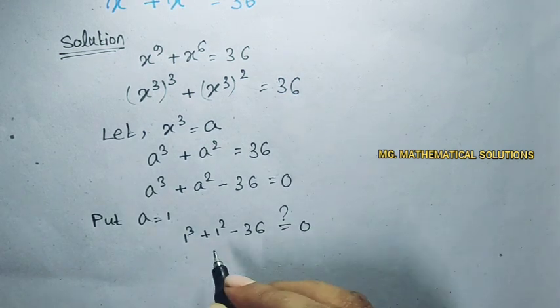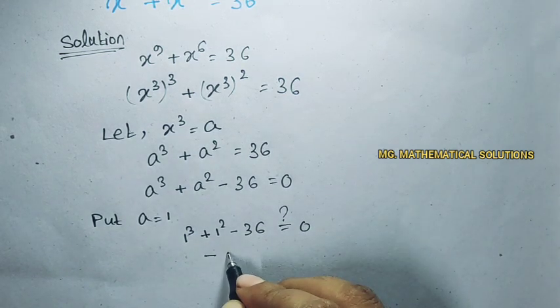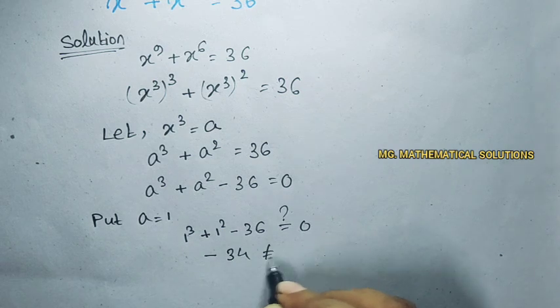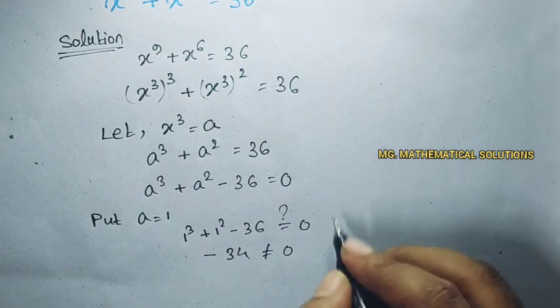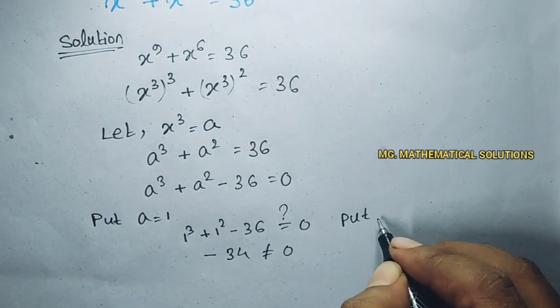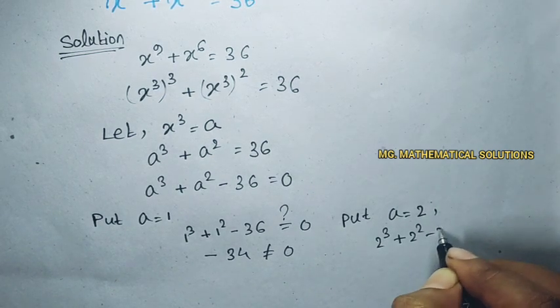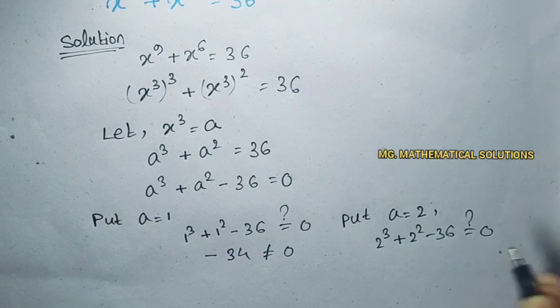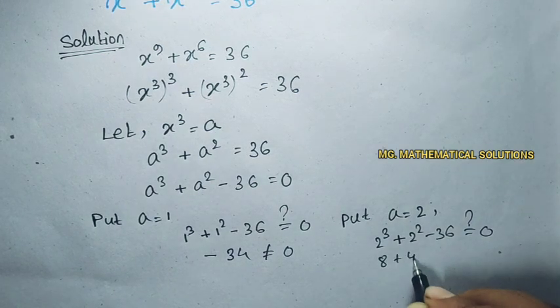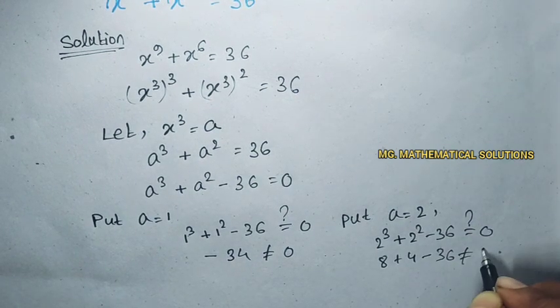0 minus 34 does not equal to 0. So now we put a equal to 2, so 2 cube plus 2 square minus 36, 0, 8 plus 4 minus 36 does not equal to 0.